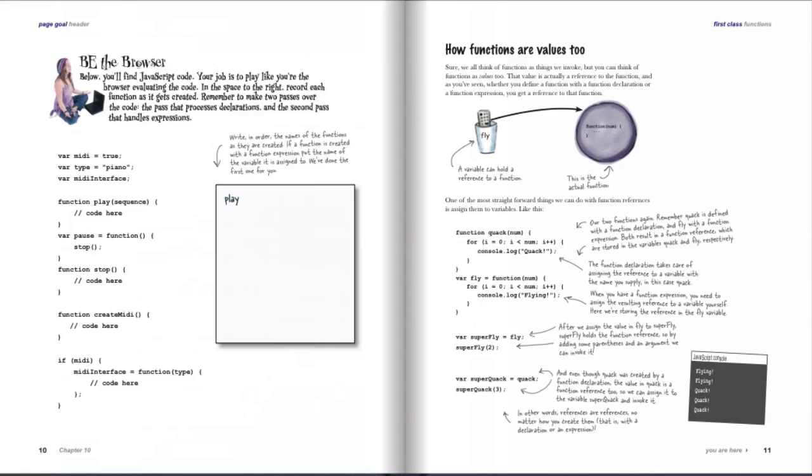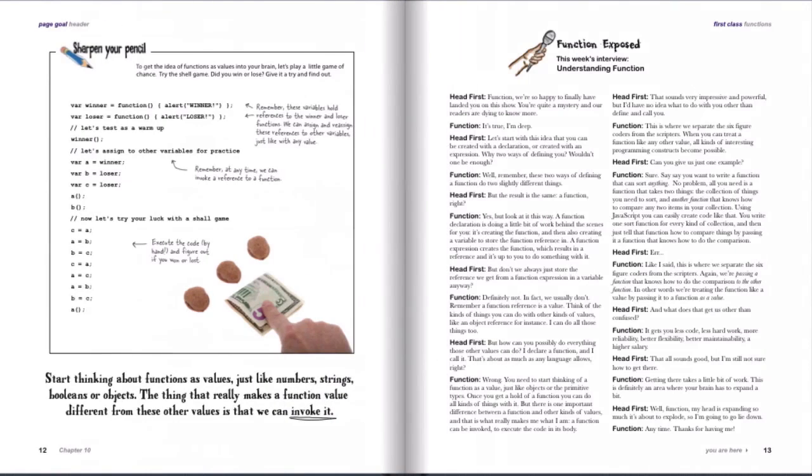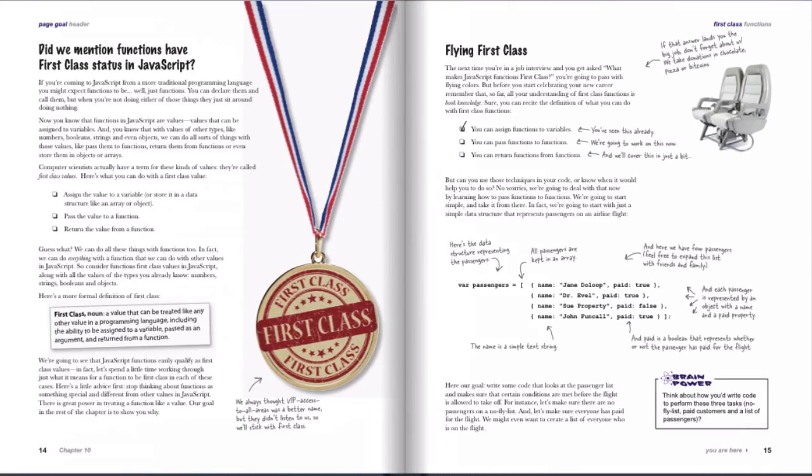Once we've gone through the details of how the browser handles creating functions, this is where we start really talking about functions as values. Thinking about a function as a value is kind of a weird thing, because when you look at a function, you might not think of it in the same way as you do a value, like you do, say, the number three. So we have an interview with Function to introduce this new way of thinking about functions, and then we really get to the heart of this topic, the concept of first-class values.